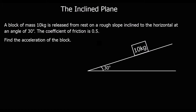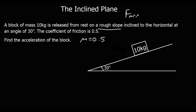Here's another problem. We've got a block of mass 10kg being released from rest on a rough slope — rough slope means we've got friction — inclined to the horizontal at an angle of 30 degrees. The coefficient of friction μ is 0.5, so friction max equals mu times R, and mu is 0.5.